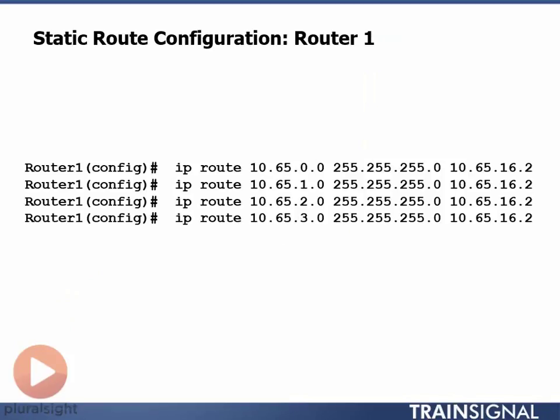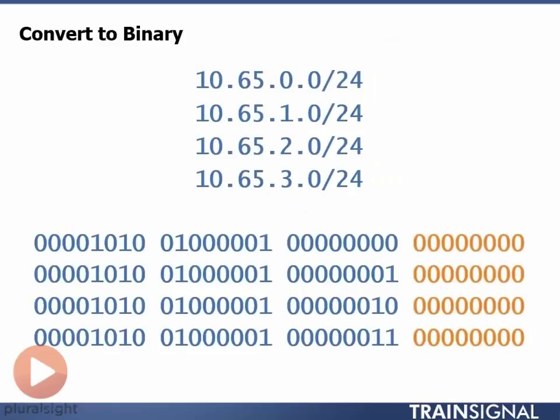Well, this is terribly inefficient, actually, and what we can do is we can actually summarize these four routes together to be much more efficient about how we create the static route. What we can do is we can actually create one static route to accommodate these four networks.